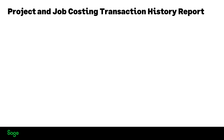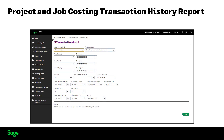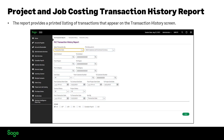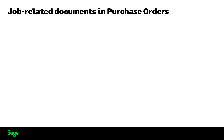Project and Job Costing Transaction History Report: use the PJC Transaction History Report to provide a printed list of transactions that appear on the Transaction History screen, with the advantage that you can print the report for a selected range of contracts, projects, categories, cost classes, customers, contract status, and project status. Also covered are job-related documents in Purchase Orders.